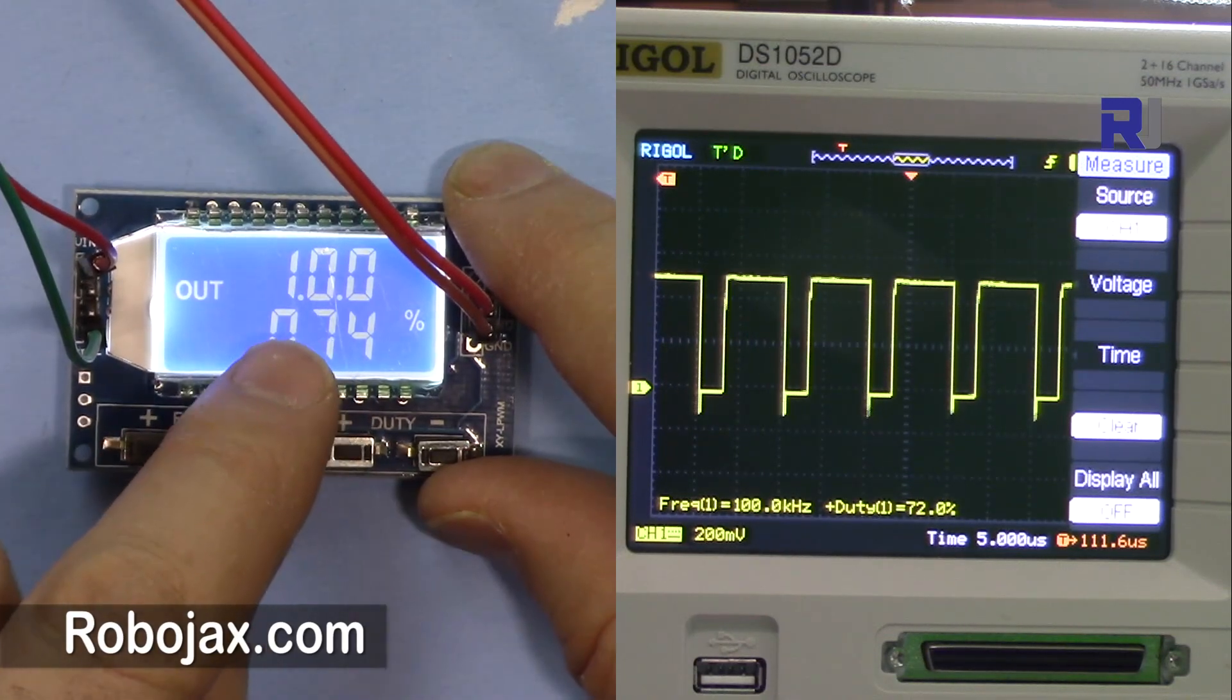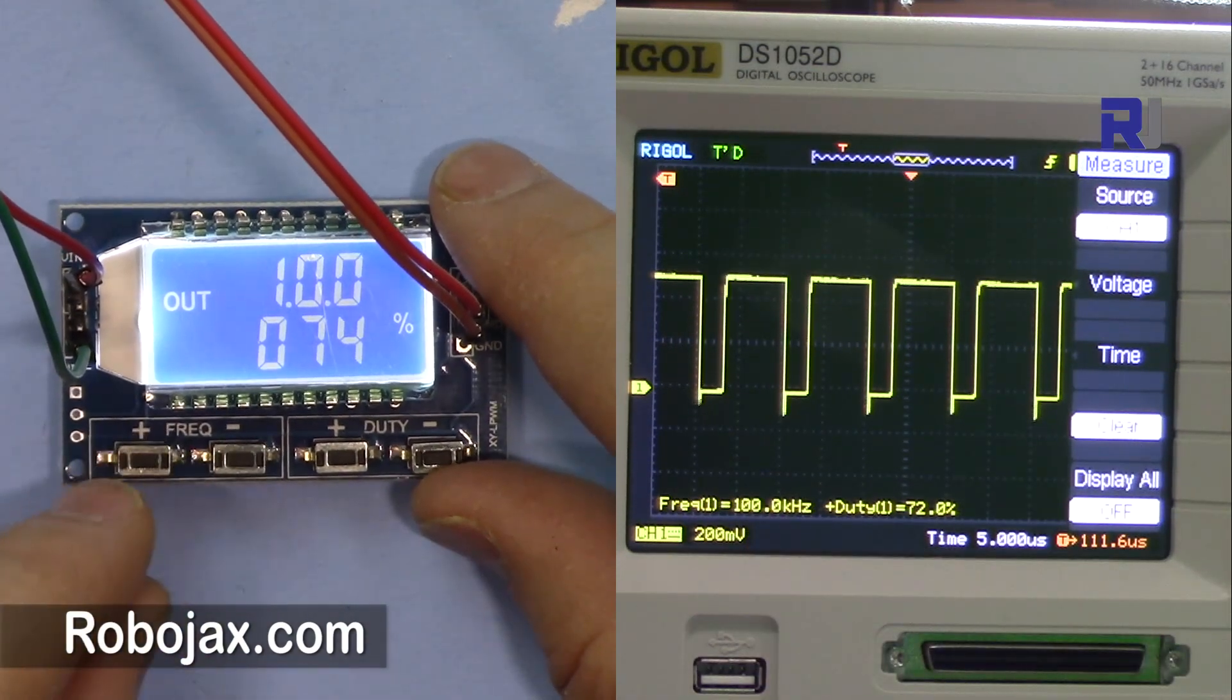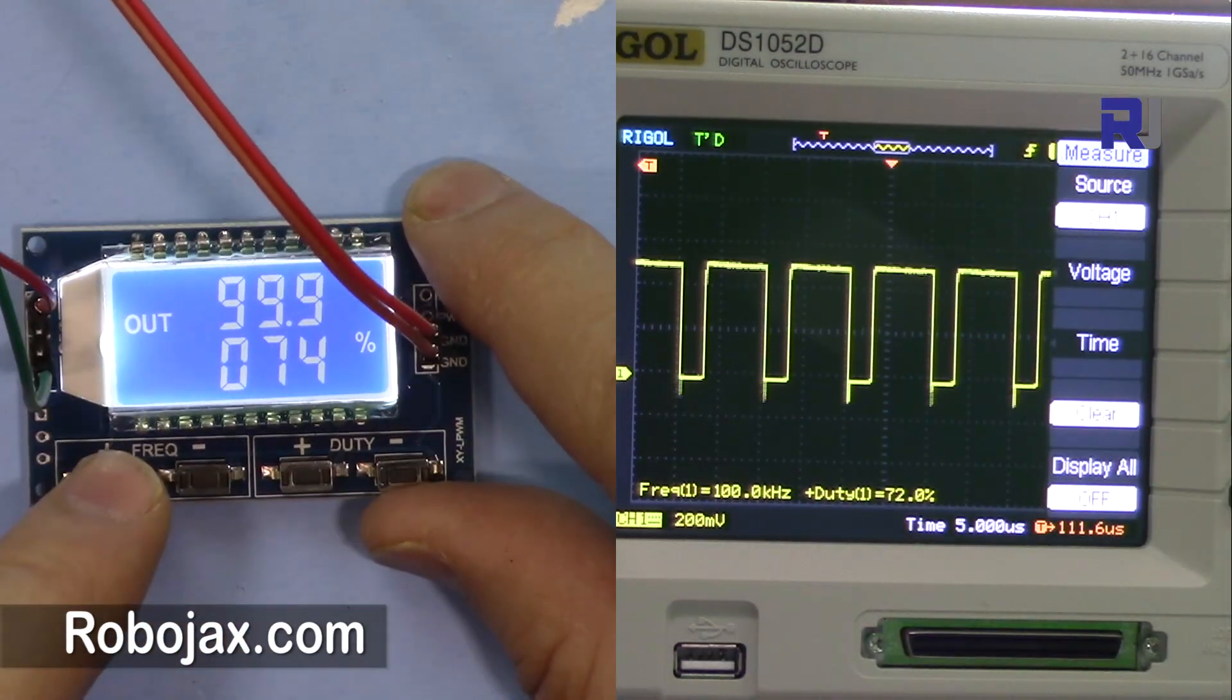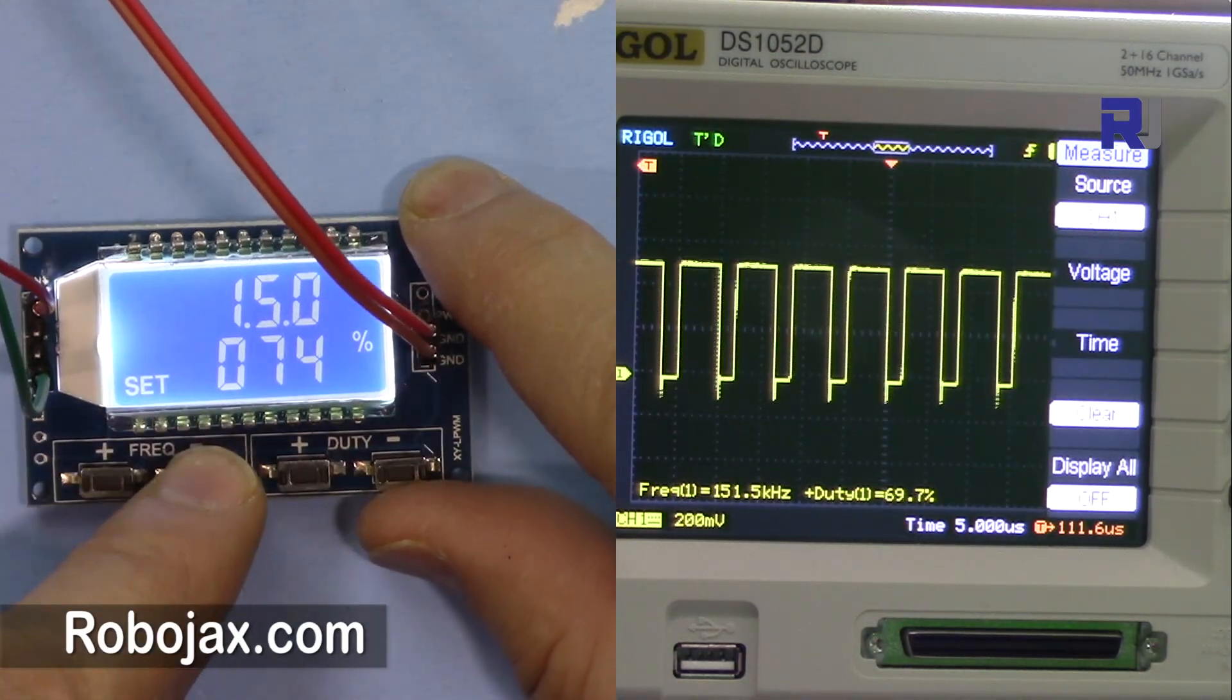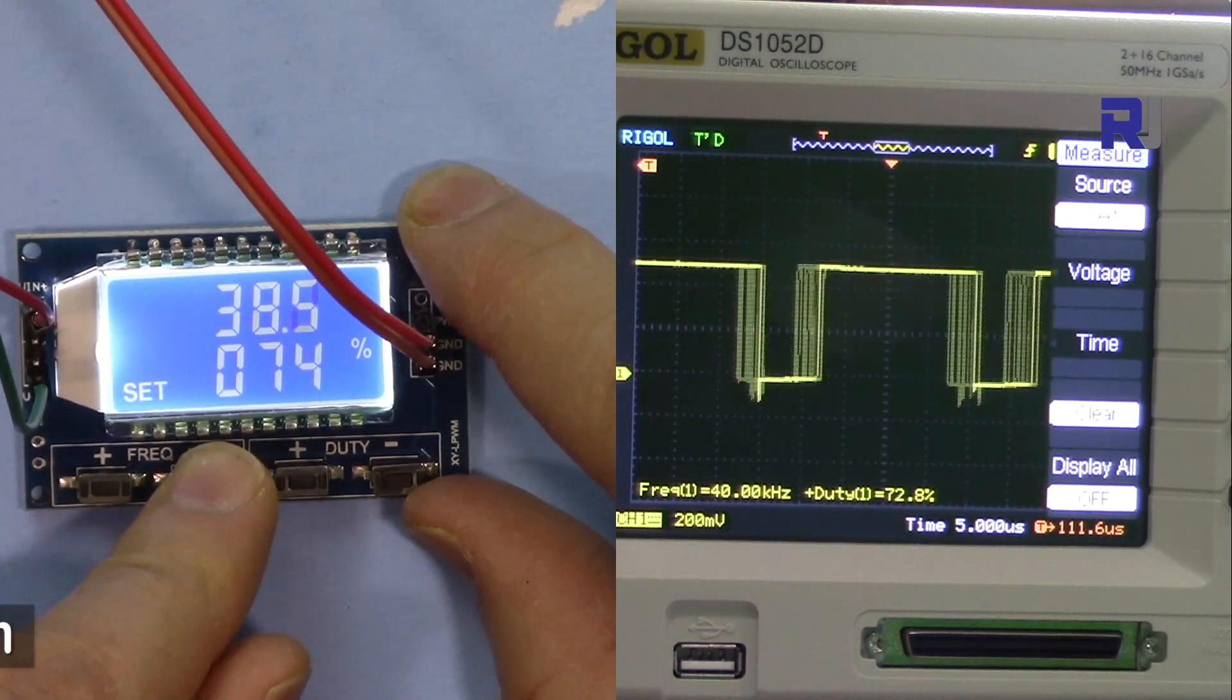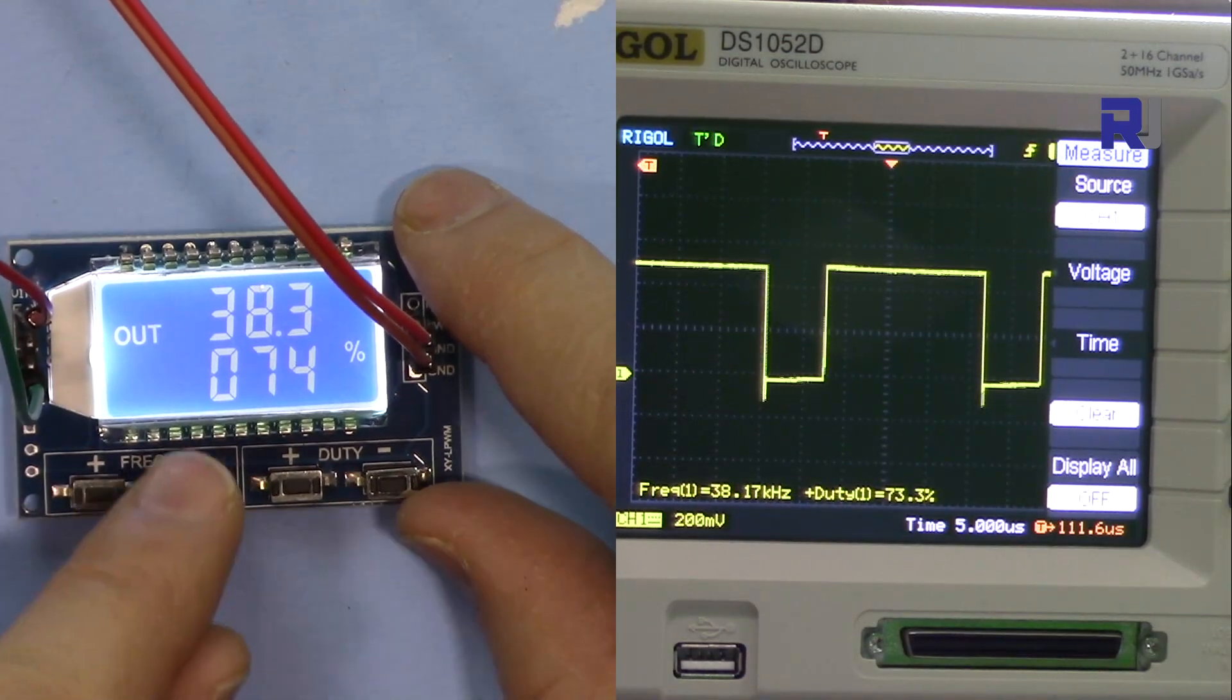When you see two dots it means 100 kilohertz. Now the number is very accurate. Let's go below. As soon as I went down from kilohertz, you can see here 38.3 and that's also 38.3 - very accurate now.